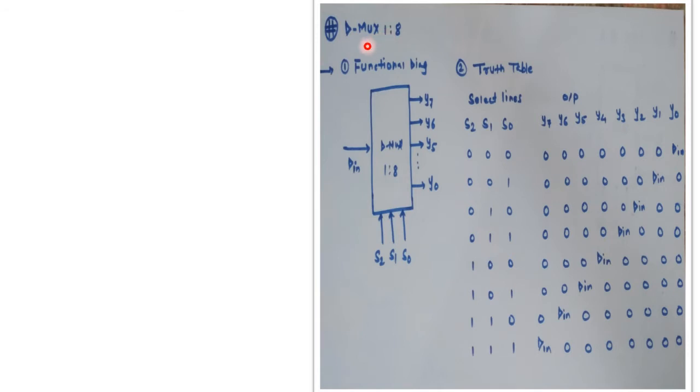As far as the demultiplexer 1 is to 8 is considered, we have a single input line and 8 output lines starting from y0 to y7. Now as we have 8 output lines there will be 3 select lines s2, s1, s0. Here 2 raised to 3 becomes 8, so the select lines will be s2, s1, s0.